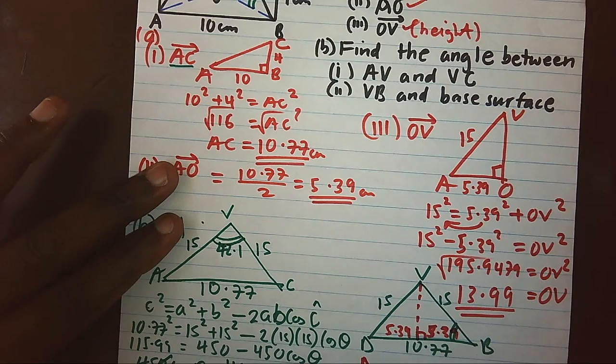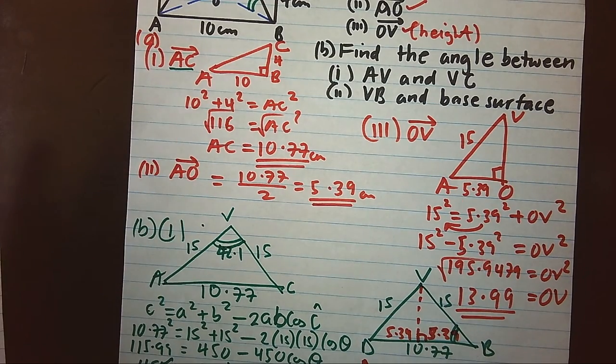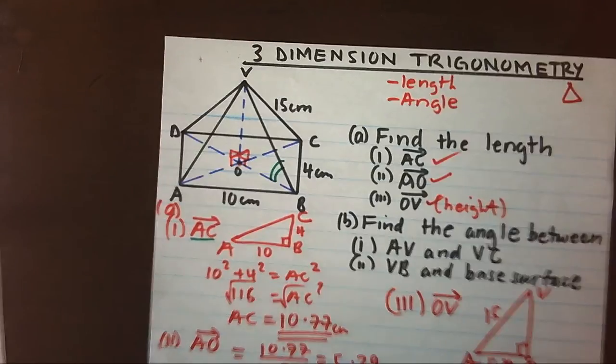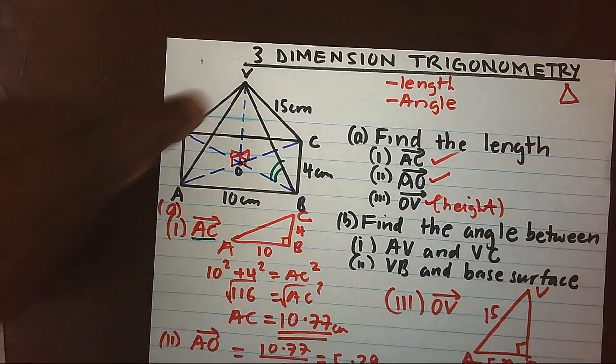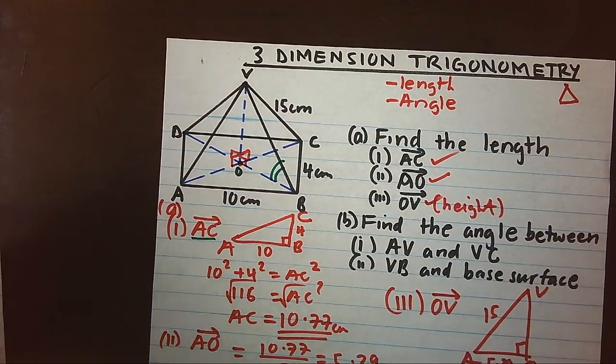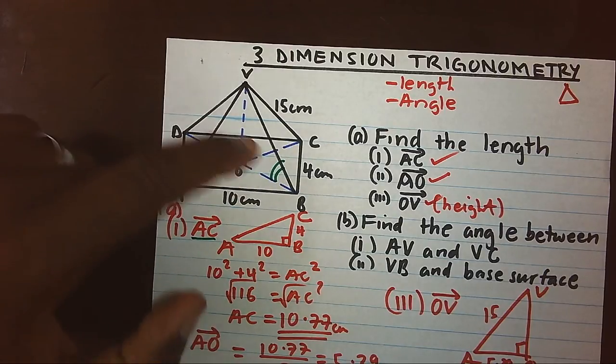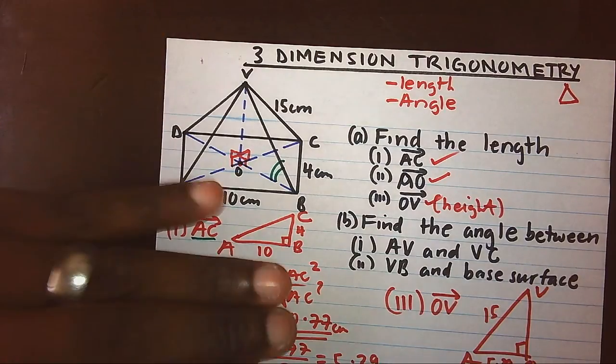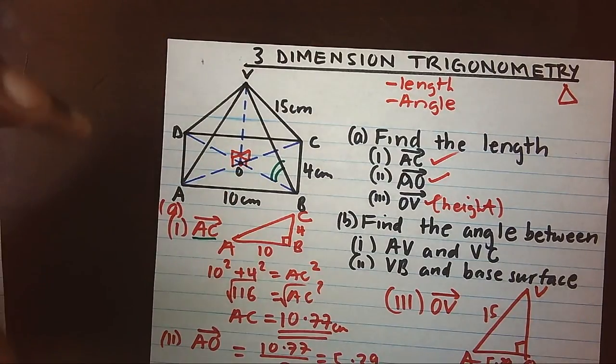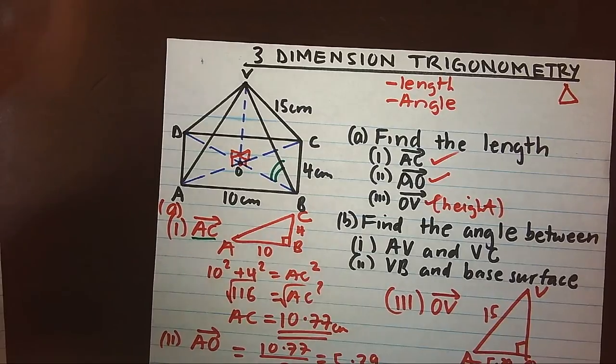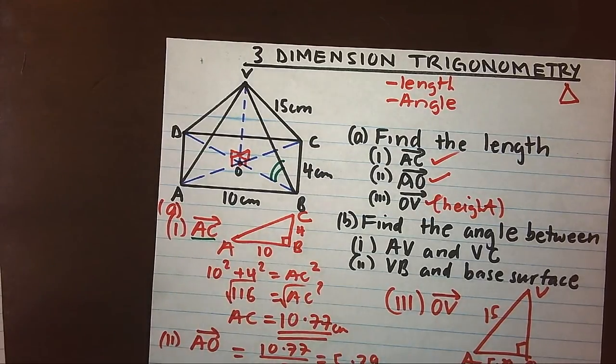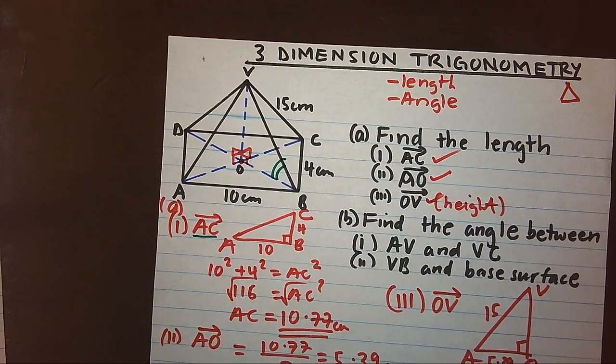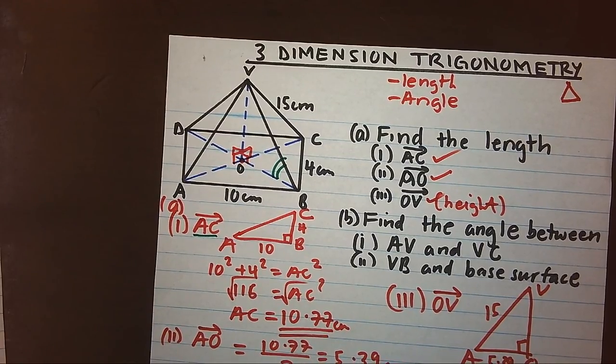This angle which we have found here is 68.9 degrees. This is one example of three-dimensional trigonometry. That is trigonometry inside three-dimensional shapes. Today, we have looked at a rectangular-based pyramid. In the next chapter, we shall look at other shapes. Probably, it could be a cuboid. And we see how we can find angles and how we can find the length of sides in the shape. Thank you for watching. If you enjoyed it, you can subscribe to my channel.